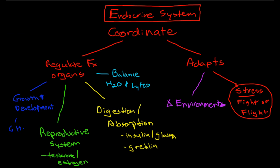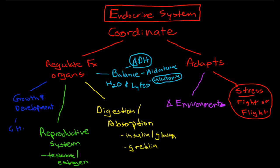The balance of water and electrolytes is controlled by ADH, or anti-diuretic hormone, which is responsible for controlling water levels, and by aldosterone, which controls sodium and potassium levels. Calcitonin from the parathyroid gland controls calcium levels in the blood. The stress hormones for fight-or-flight include the adrenal medullary hormones like epinephrine and norepinephrine, and also cortisol from the adrenal cortex — here is a picture of an adrenal gland.